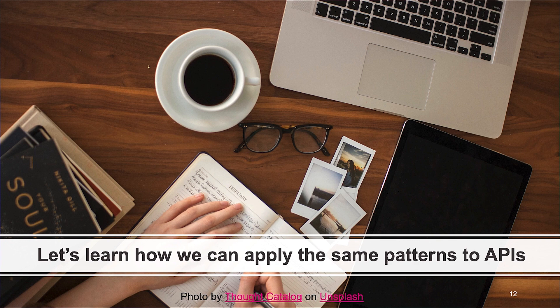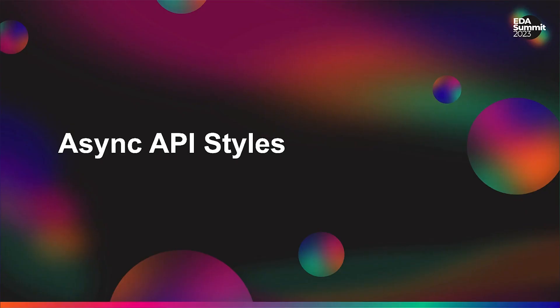So let's take these patterns we've talked about and start thinking about how we can shift our APIs into more of an event-driven style of interaction. The first thing we need to do is look at the different API styles that are available to us today.